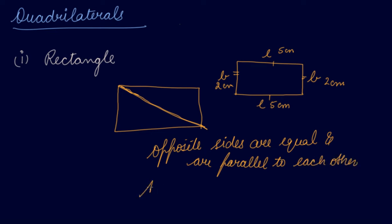The angles in a rectangle are all 90 degrees — all four angles are right angles. So this is a rectangle.